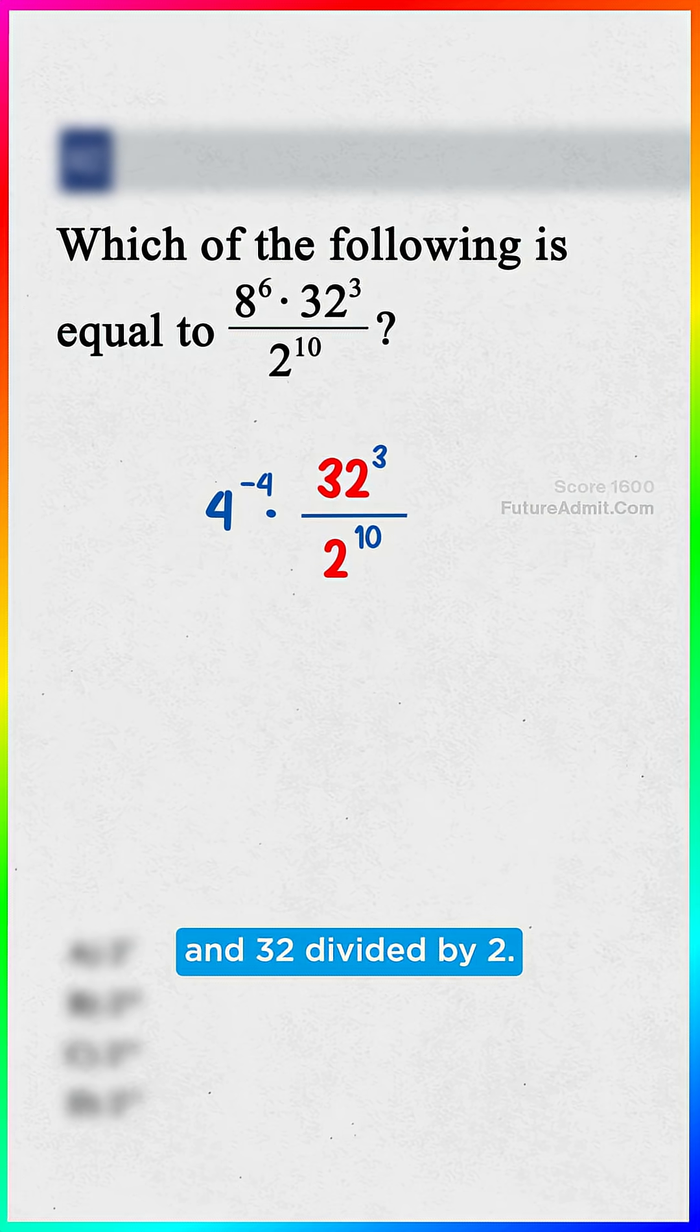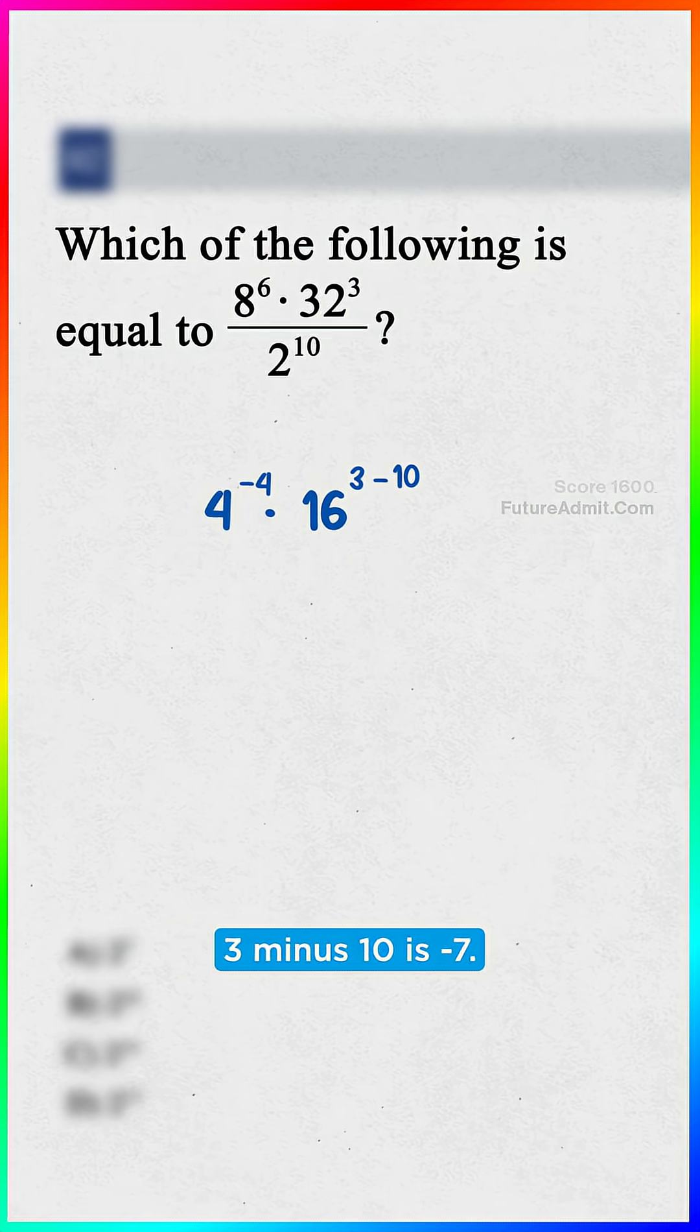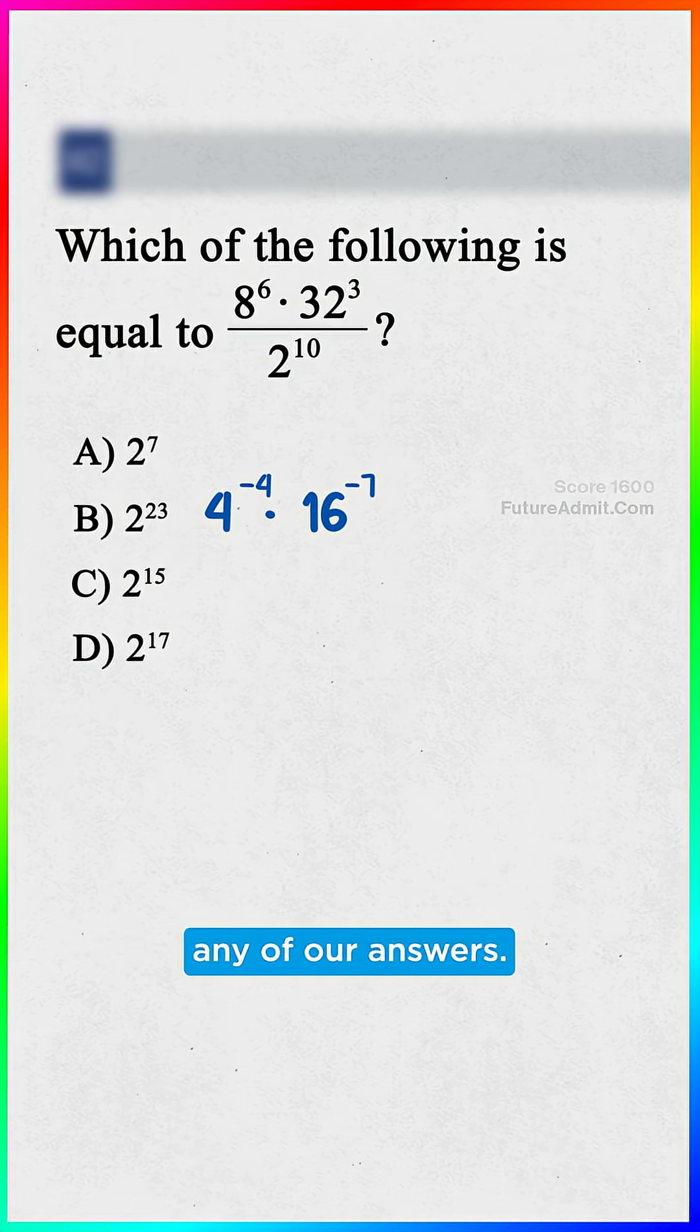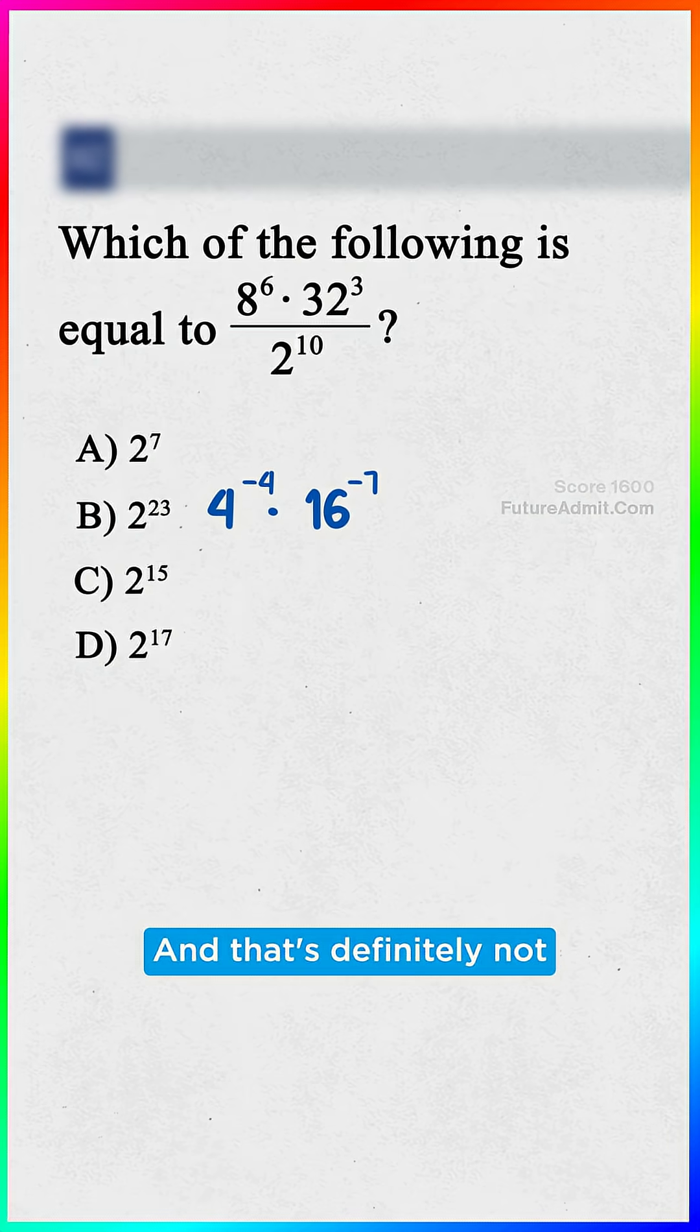And 32 divided by 2, that's 16, 3 minus 10 is negative 7. And that doesn't look like any of our answers. And that's definitely not how math works.